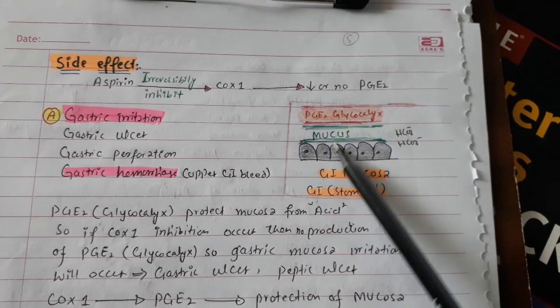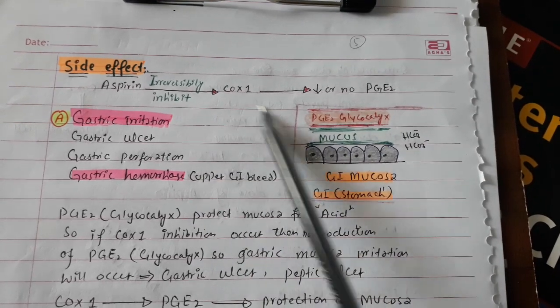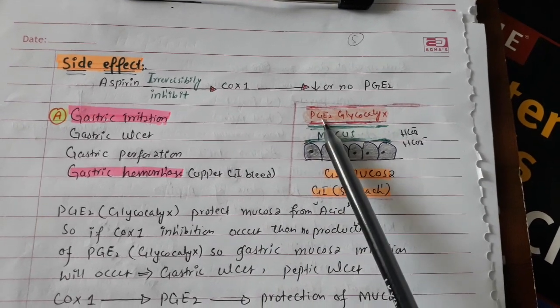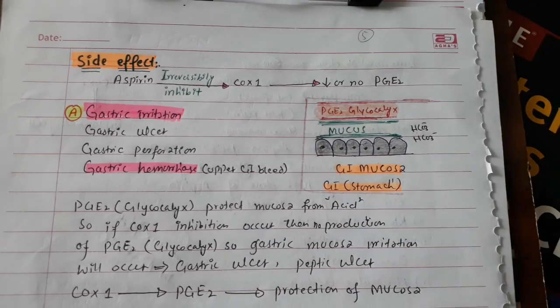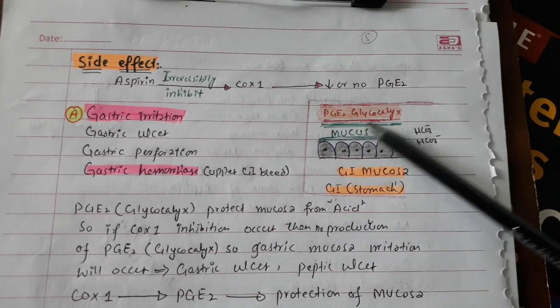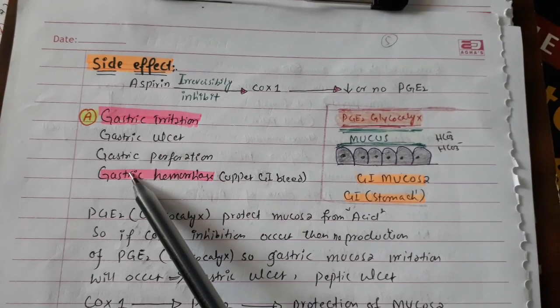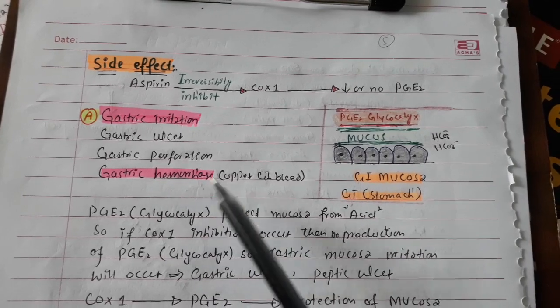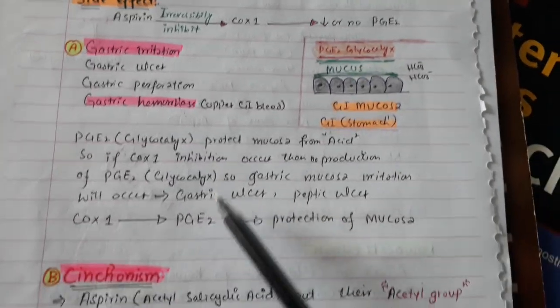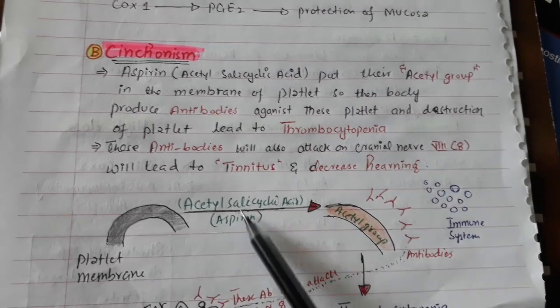If we inhibit the COX-1 enzyme, we are inhibiting the production of prostaglandin E2 (glycocalyx), and that is how mucosal protection is going to be decreased. This leads to gastric irritation and gastric ulcer, which can lead to gastric perforation and gastric hemorrhage.